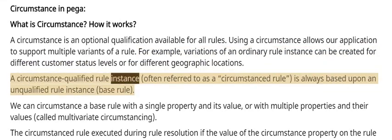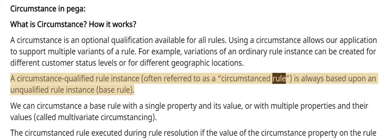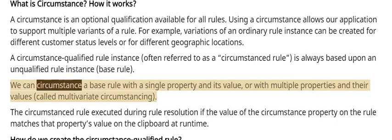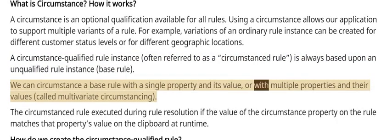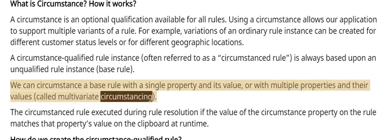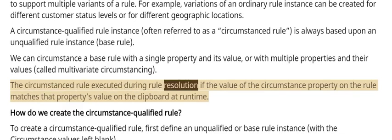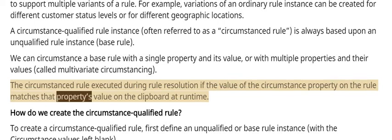A circumstance-qualified rule instance, often referred to as a circumstanced rule, is always based upon an unqualified rule instance, called a base rule. We can circumstance a base rule with a single property and its value, or with multiple properties and their values, called multivariate circumstancing. The circumstanced rule is executed during rule resolution if the value of the circumstance property on the rule matches that property's value on the clipboard at runtime.